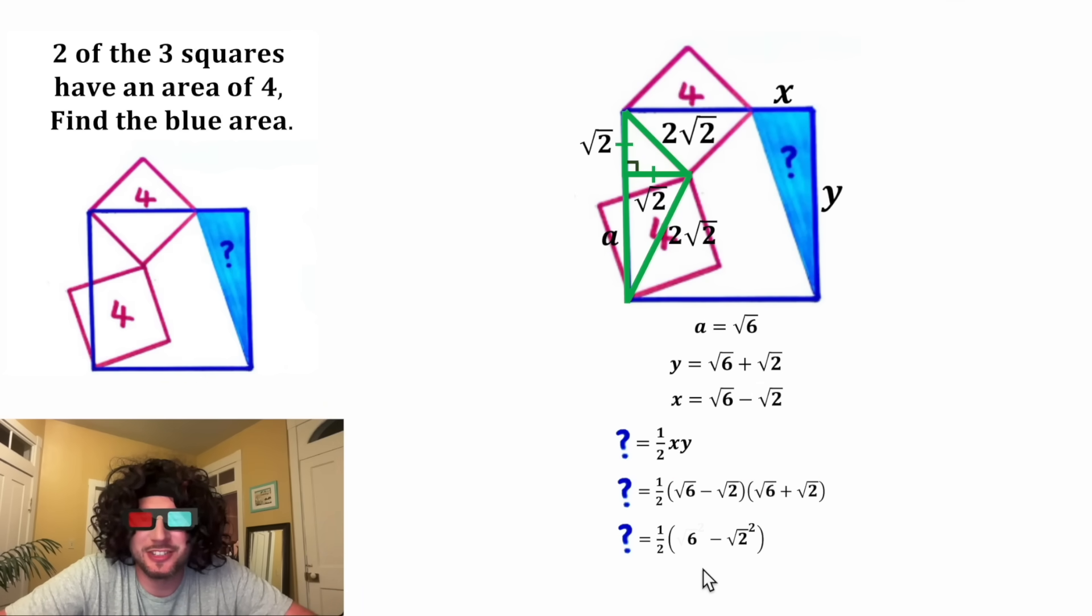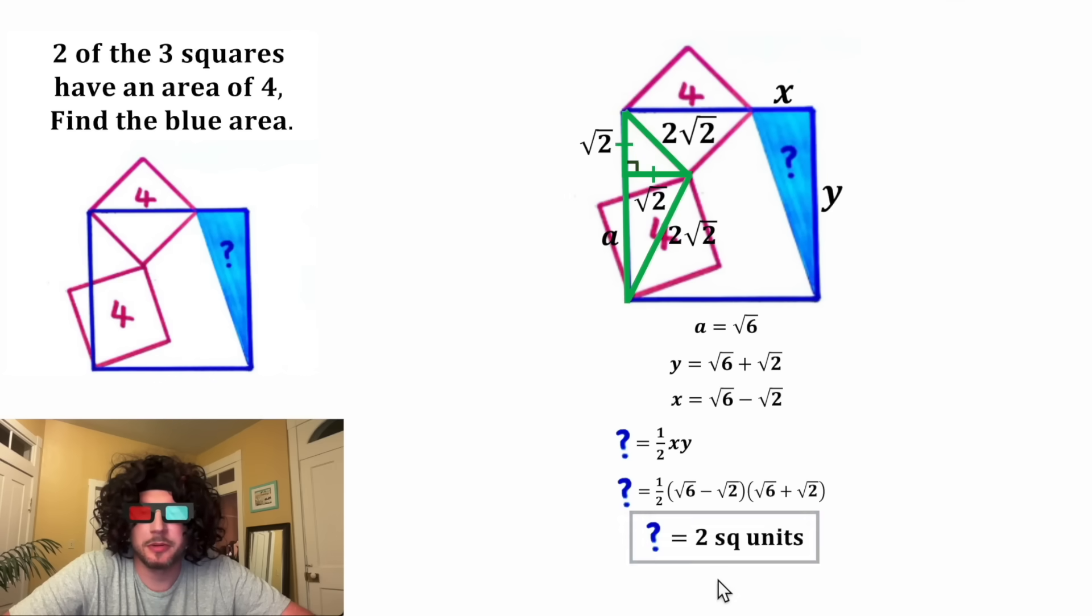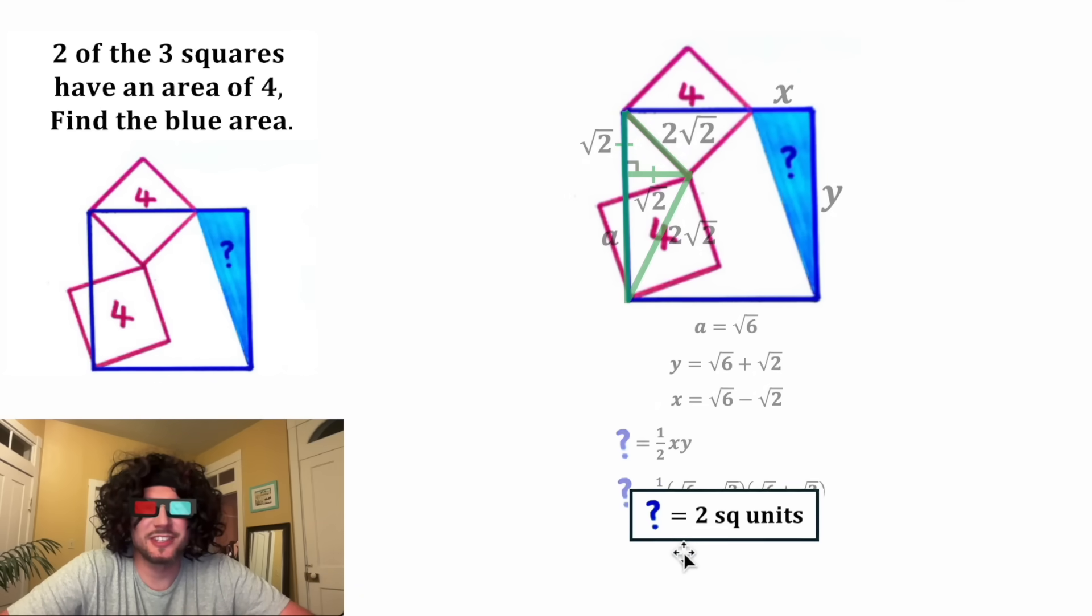For this term, the square root and the square will cancel each other out. And also for this one. So we have six minus two, which is equal to four. And one half times four is two. Let's smush it together. Give it a label of square units and put a box around it. This is the answer to our question.